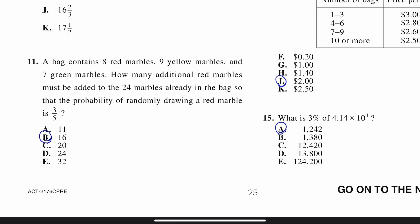A bag contains 8 red marbles, 9 yellow marbles, and 7 green marbles. How many additional red marbles must be added to the 24 marbles already in the bag so the probability of randomly drawing a red marble is 3 fifths.